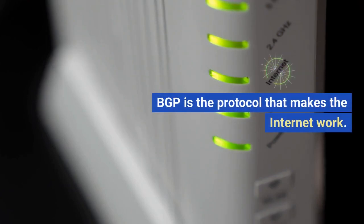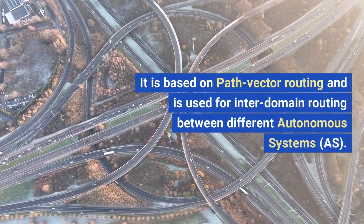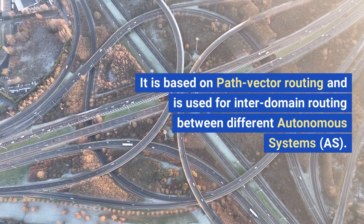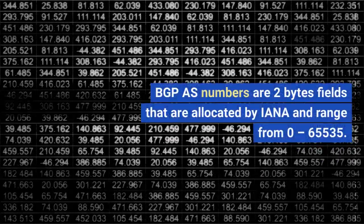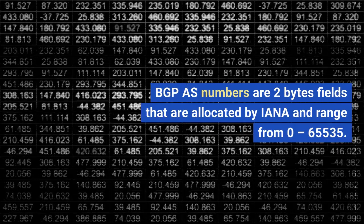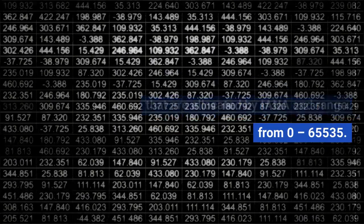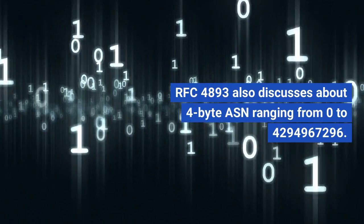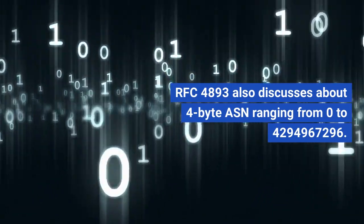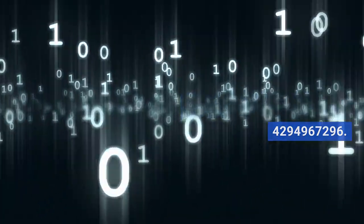BGP is the protocol that makes the internet work. It is based on path vector routing and is used for inter-domain routing between different autonomous systems. BGP AS numbers are two-byte fields allocated by IANA, ranging from 0 to 65,535. RFC 4893 also discusses 4-byte ASNs ranging from 0 to 4,294,967,296.